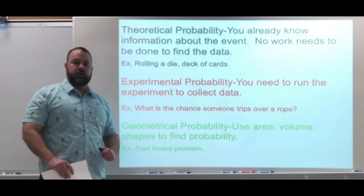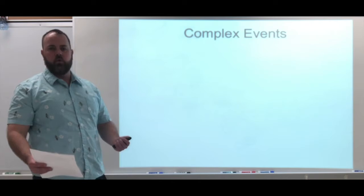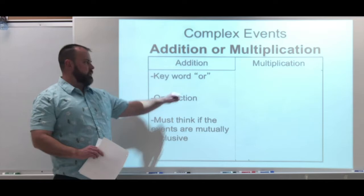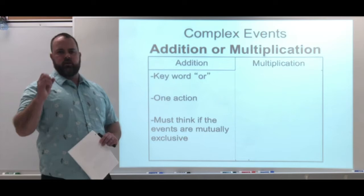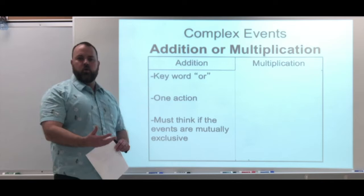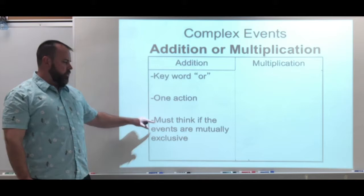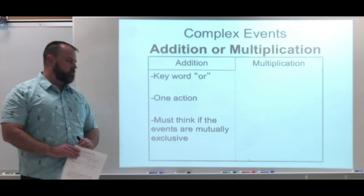Now, complex events are where we take two or more simple events and put them together, using either the addition or multiplication rule. For the addition rule, the key word is 'or.' The addition rule applies when there's only one action happening but multiple outcomes can count as a success — either or could happen and we count it as a success. You also have to think about whether the events are mutually exclusive or not.